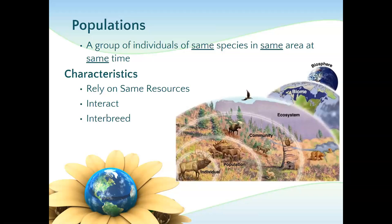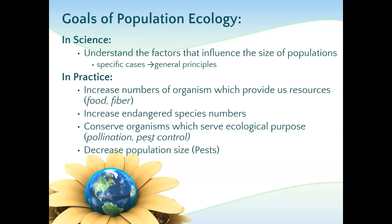Like you have the prairie dogs — there's one that sets out and is the lookout for the rest of them. Or the bees — they work together in the hive. So you got the idea that they all interact.